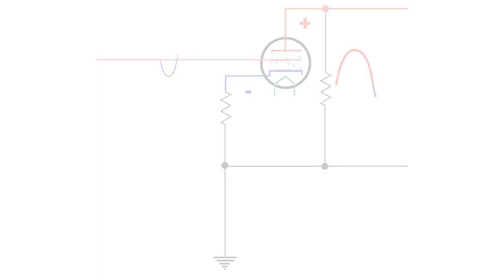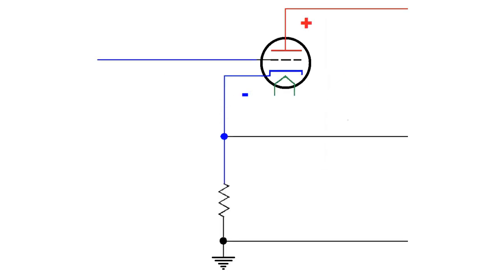Now to create a cathode follower, all we have to do is remove the load resistor and take our signal from across the cathode resistor.